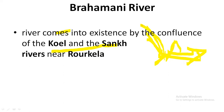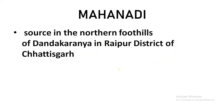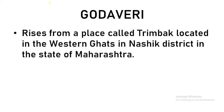Godavari rises from a place called Trimbak located in Nashik district of Maharashtra. Godavari originates from Maharashtra — this is very, very important. Next, Krishna river rises at Mahabaleshwar in Satara district of Maharashtra. So both Godavari and Krishna originate in Maharashtra.